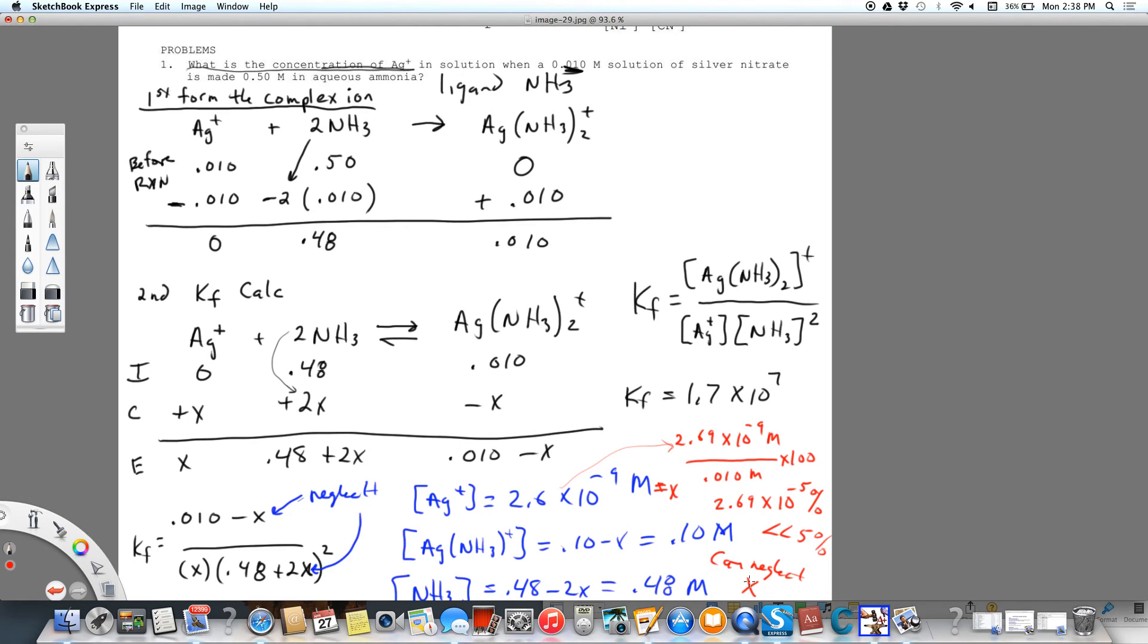Okay, so to recap, what we did was first we formed the complex ion because initially it was zero. So we set up the reaction using up all of our limiting reactant to set this up as our initial or before equilibrium. Okay, so this is a way of helping us solve the problem mathematically. Again, zero, silver is never going to be zero. Then we plug these numbers as our initial before equilibrium.